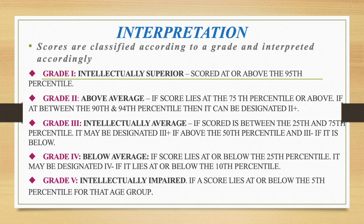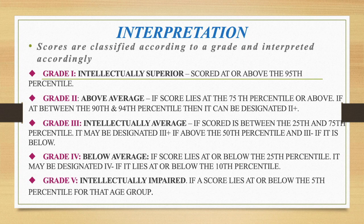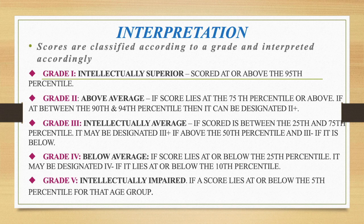If the score lies at or above 25th percentile, it will be designated as Grade 4, below average. If it lies at or below the 10th percentile, then Grade 4 minus. If a score lies at or below the 5th percentile, then the person falls in Grade 5, intellectually impaired.